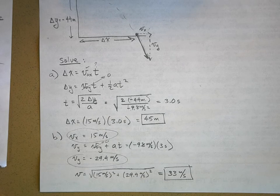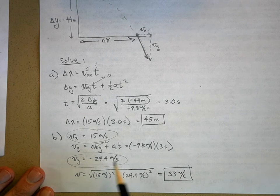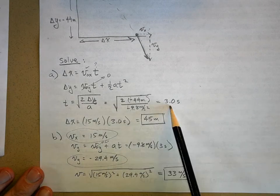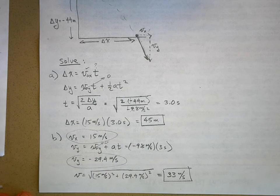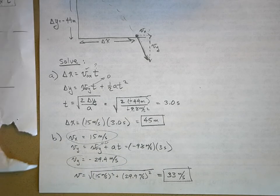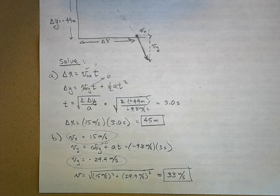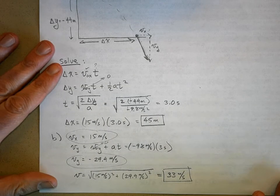But what if I made a mistake on my time? I don't want to use the 3.0 seconds to figure this out, because if I made a mistake finding time I'd carry that mistake forward. So let's use the fourth kinematic equation instead.